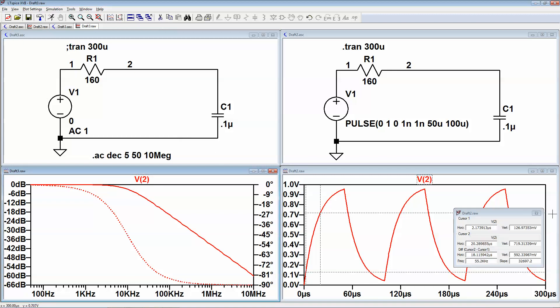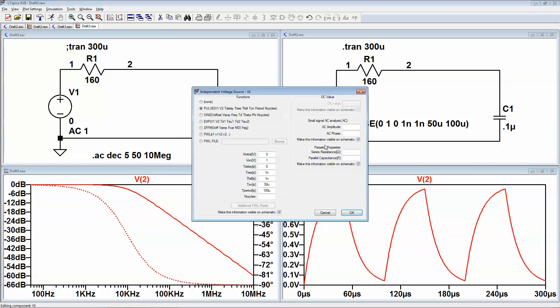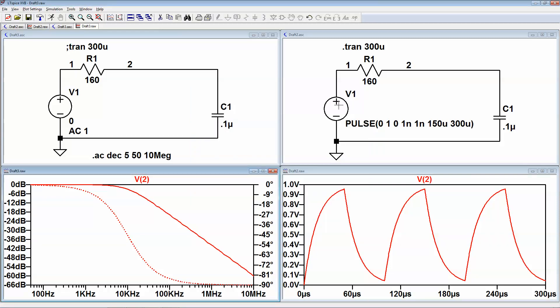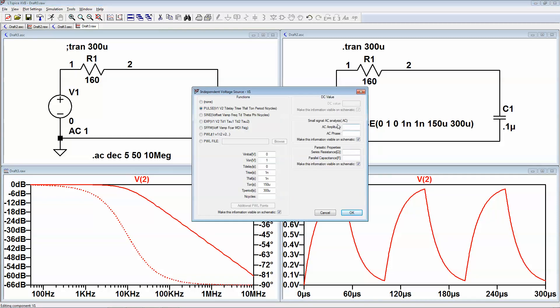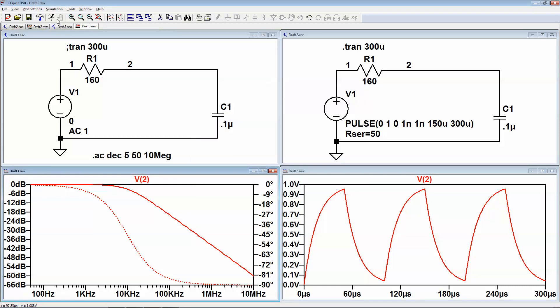Now there's something that you need to know about these function generators, and I'm going to put this back to where it was so that you can see: they have a 50 ohm series impedance. Now you can just right-click on the voltage, parasitic properties, series resistance, and just put 50 ohms. And now we're going to run it.